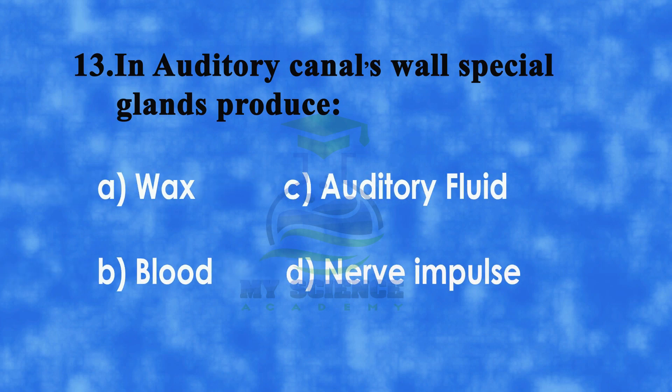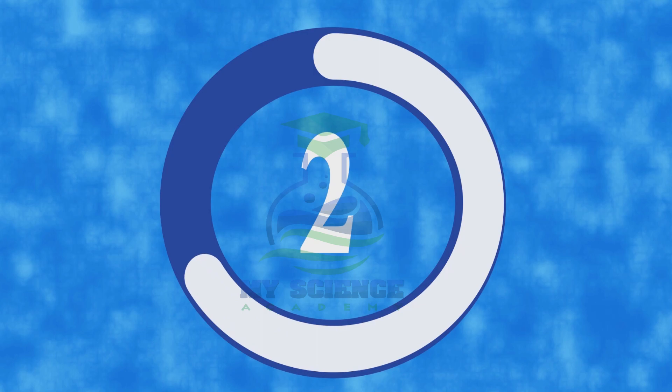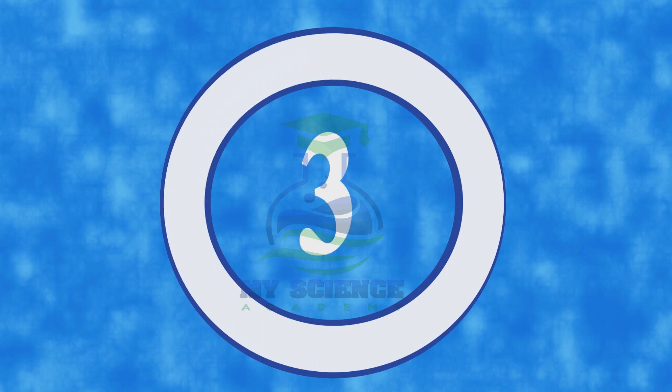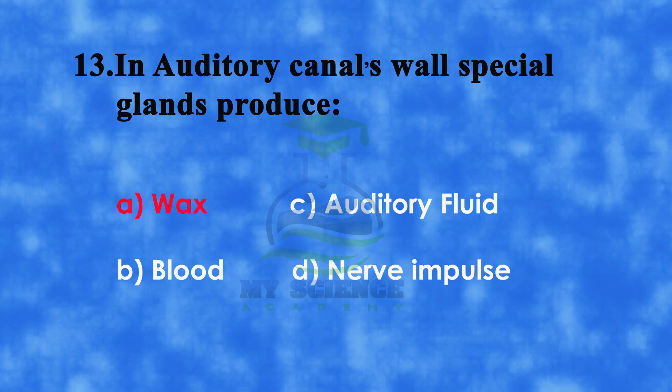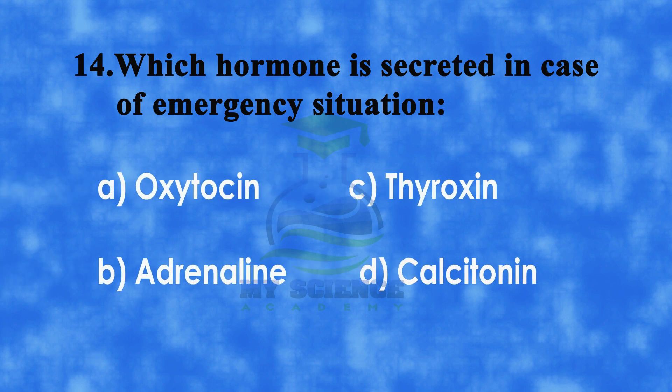Number 13: In auditory canal walls, special glands produce. A: wax, B: blood, C: auditory fluid, or D: nerve impulse. And correct answer is A: wax.